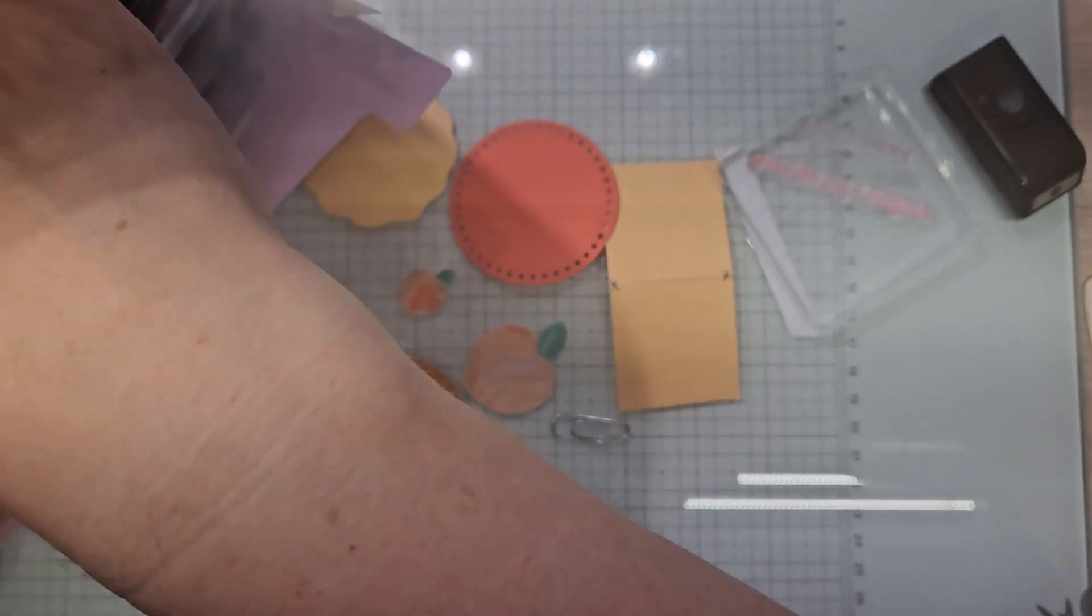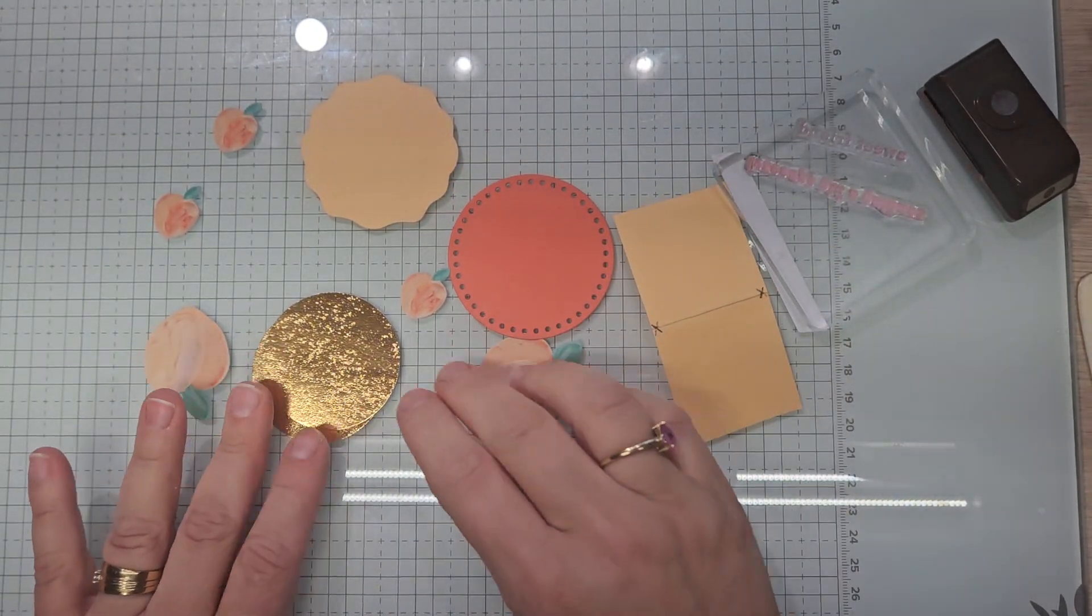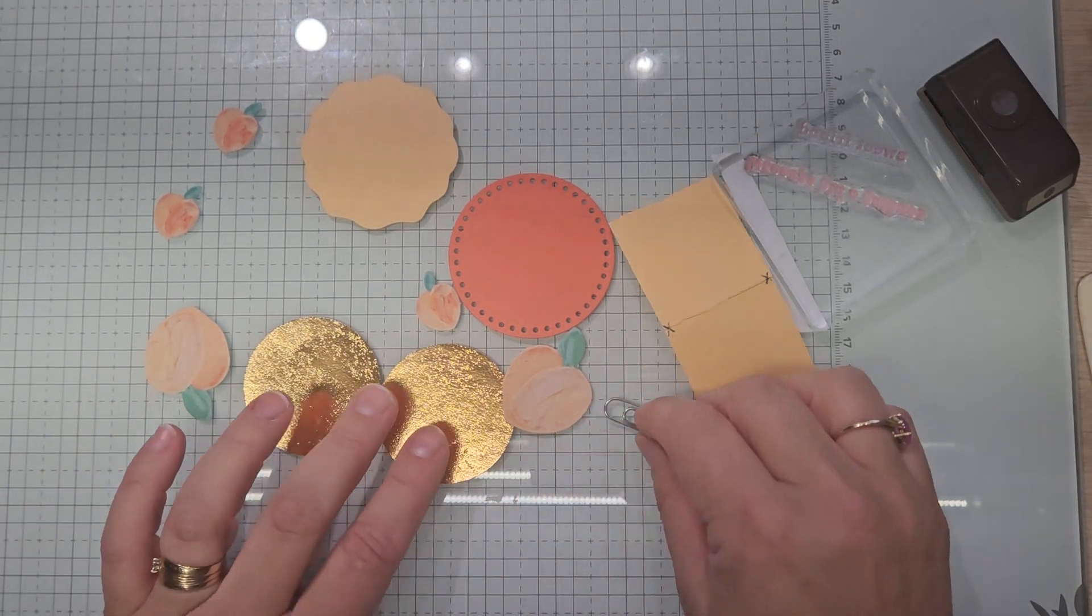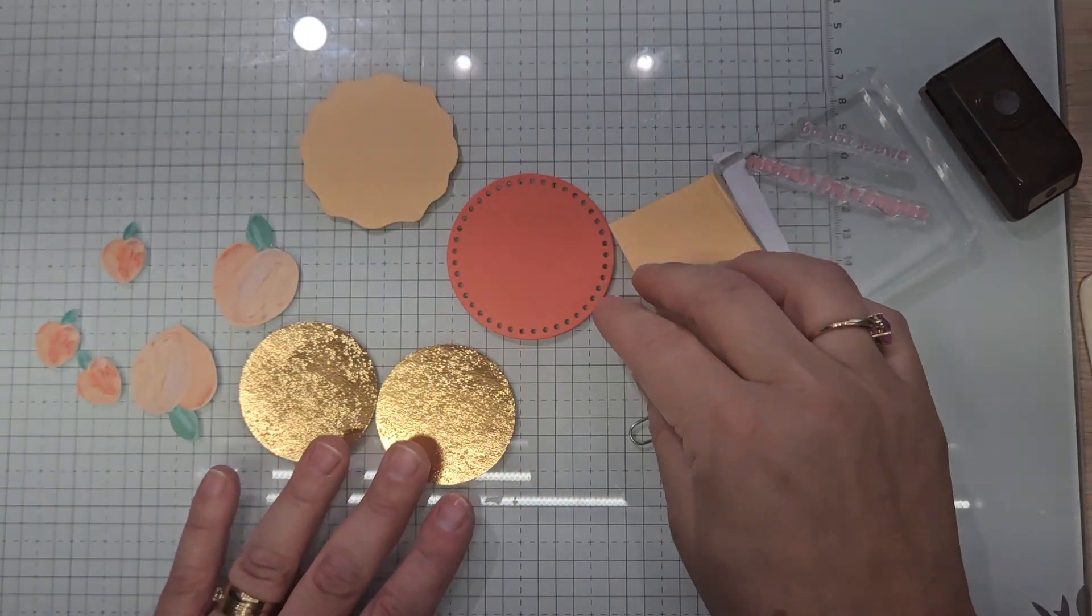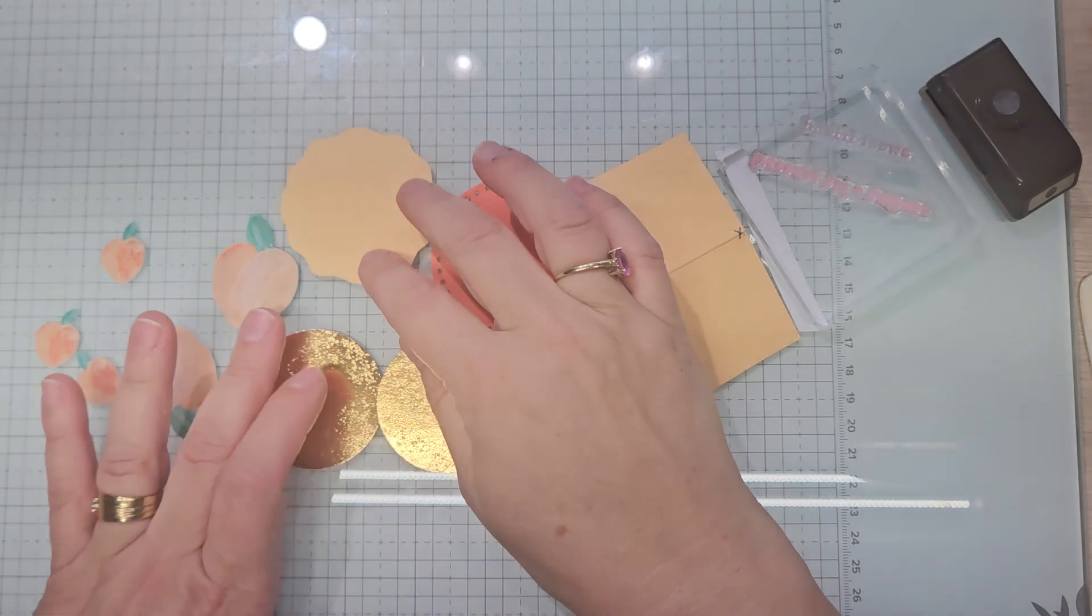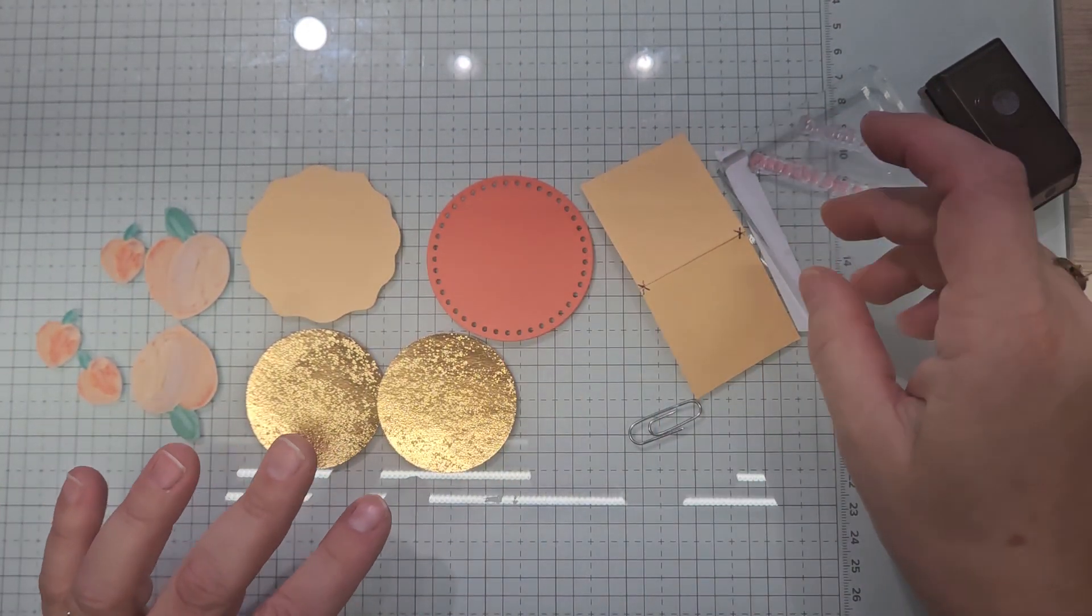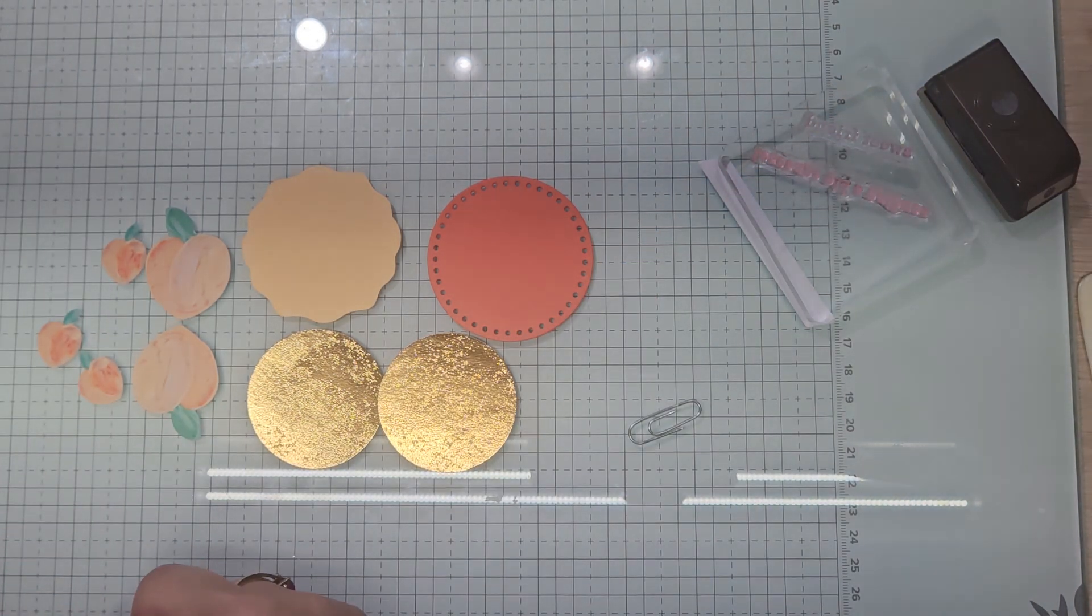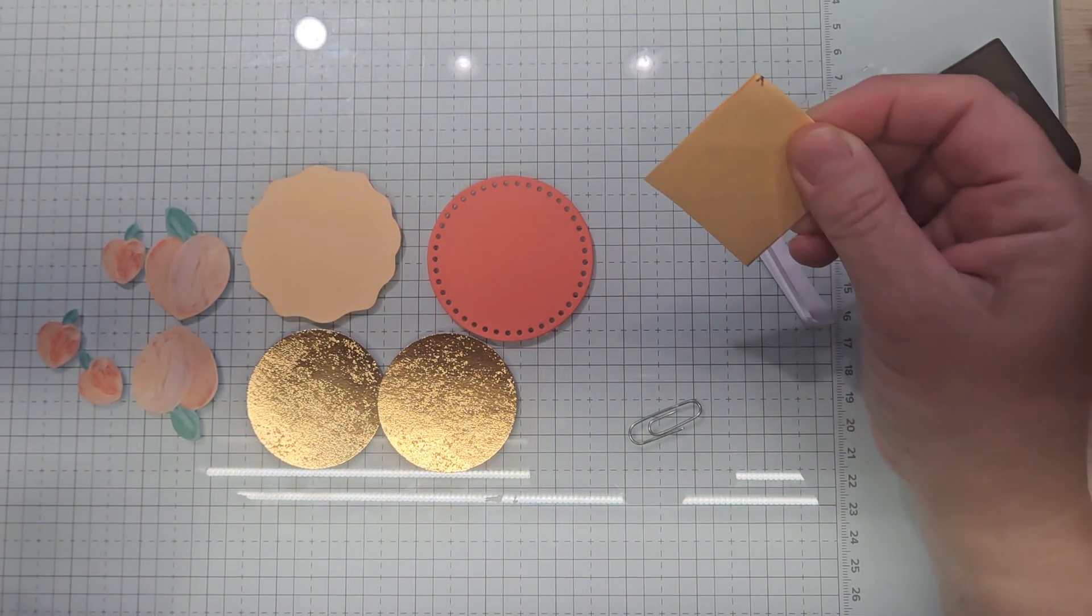This is what we're going to be using: two of these circles, these circles are two inch circles. I have five peaches, two large three small, the everyday detail die circle in Calypso Coral and the decorative circle punch. Then I have a piece that is one and three quarters by three and five eighths. It is simply folded in half.